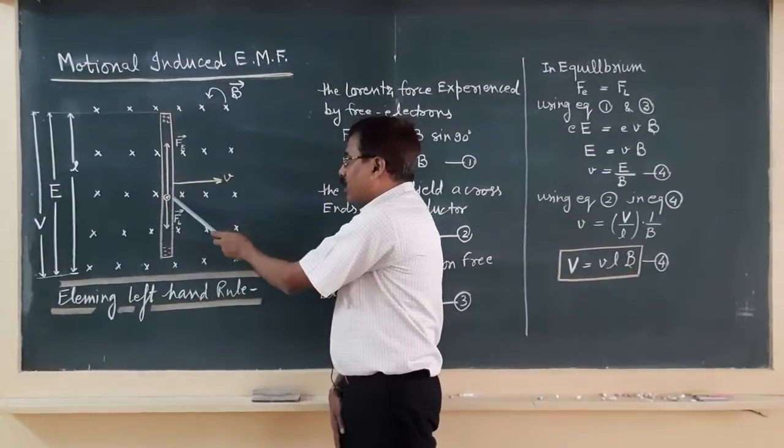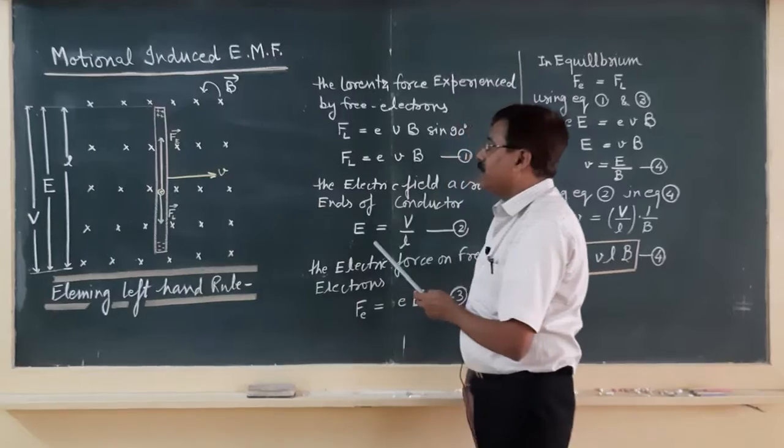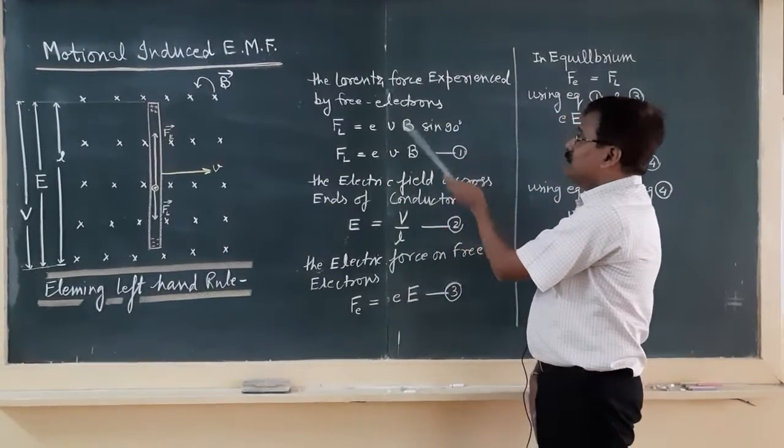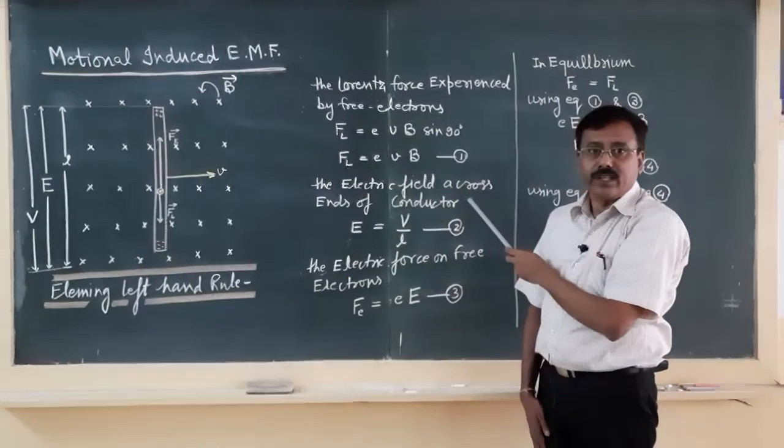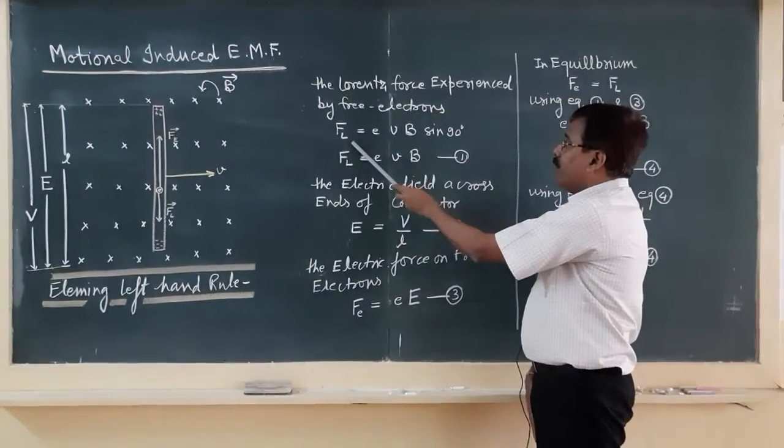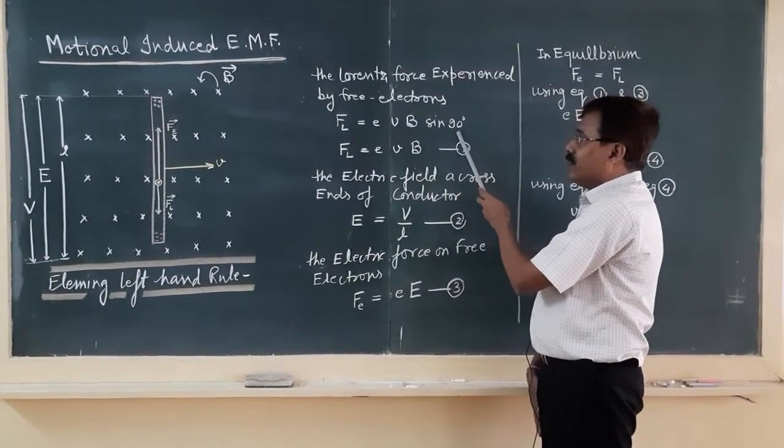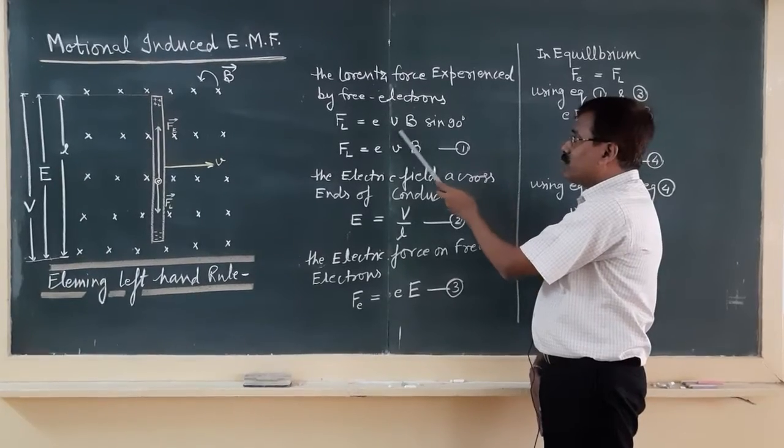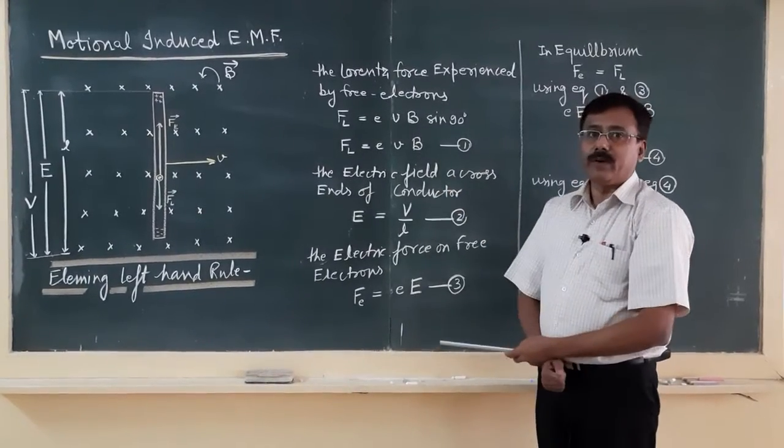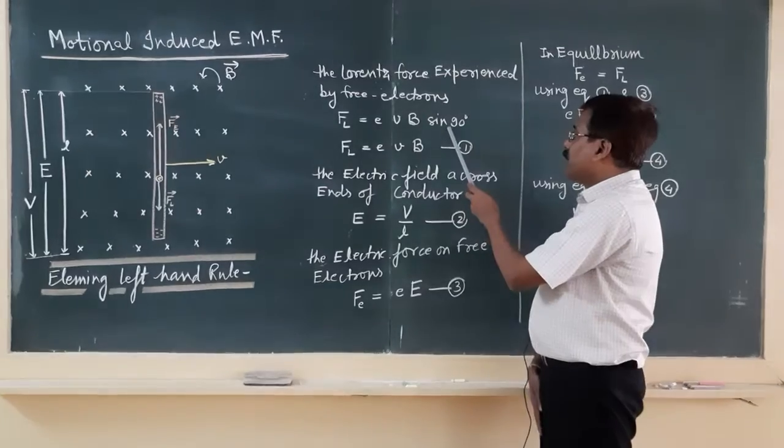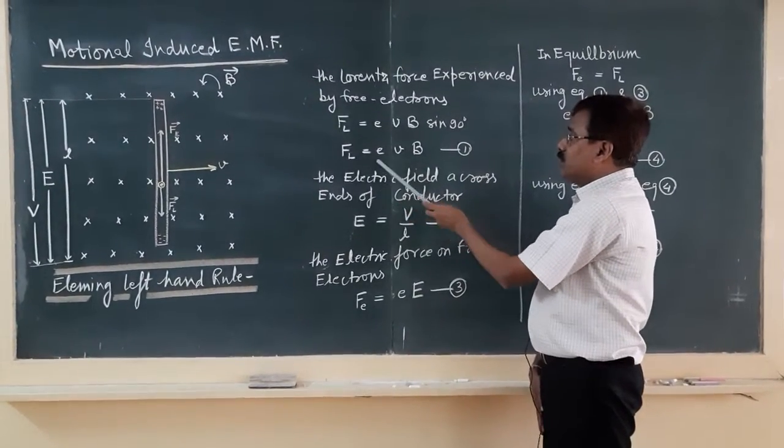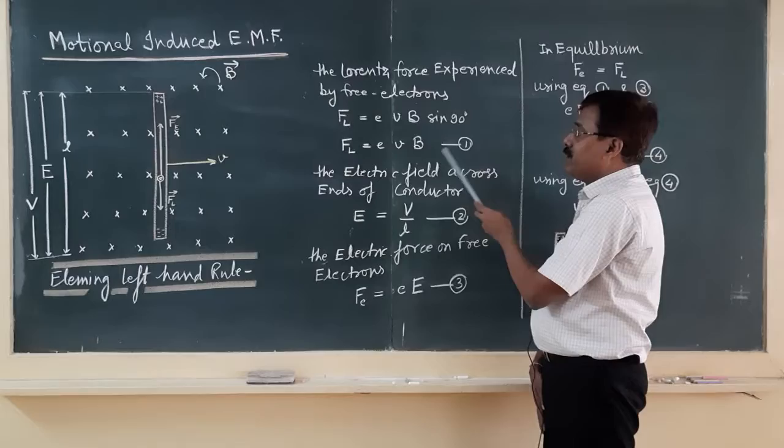So, what will be the Lorentz force experienced by the electron? When the conductor is moving in the magnetic field, it will be F_L equals evB sin 90. Sin 90 because velocity and B are mutually perpendicular to each other, and sin 90 is 1. So, the Lorentz force will be evB.